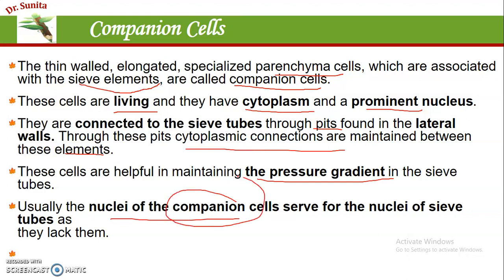The nucleus of the companion cells serves for the nuclei of the sieve tube, because mature sieve tubes do not have a nucleus.